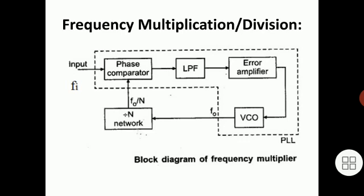Frequency multiplication can also be obtained by operating the PLL in harmonic locking mode. For input signals rich in harmonics, such as a square wave, the VCO can lock directly onto the Nth harmonic of the input signal without a frequency divider network. The value of N is normally limited to 10, since the amplitude of higher order harmonics decreases as the order increases, making effective locking difficult to achieve.